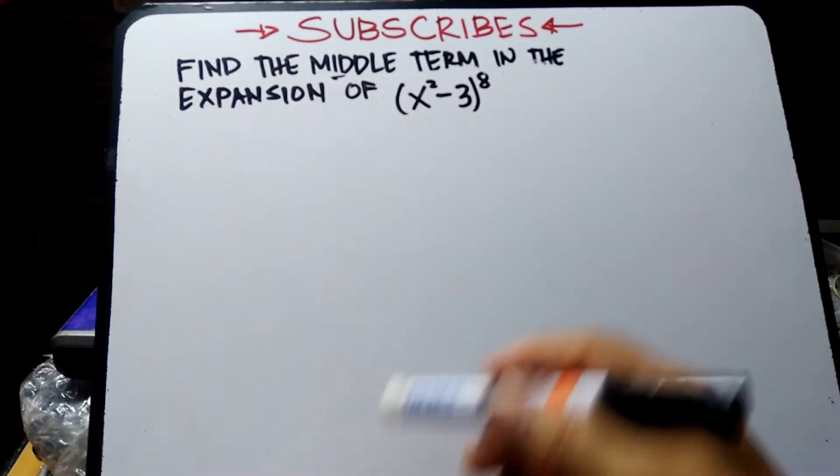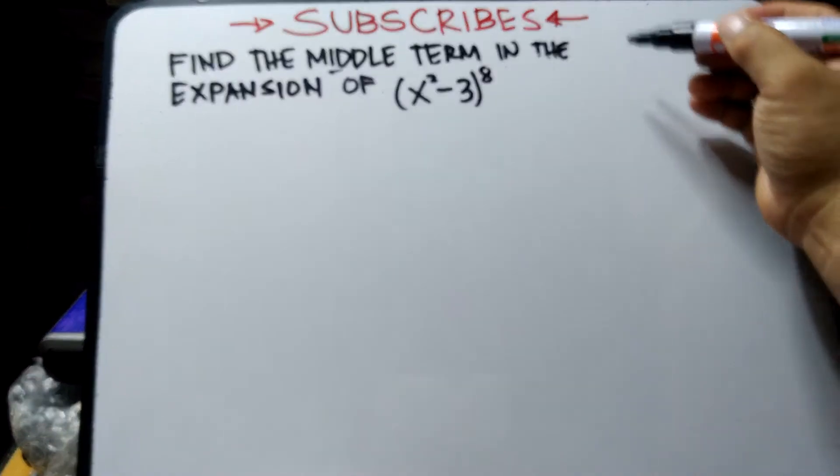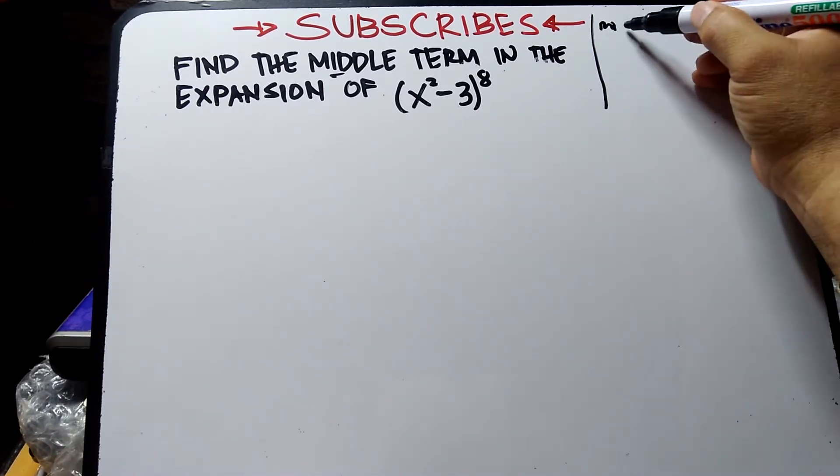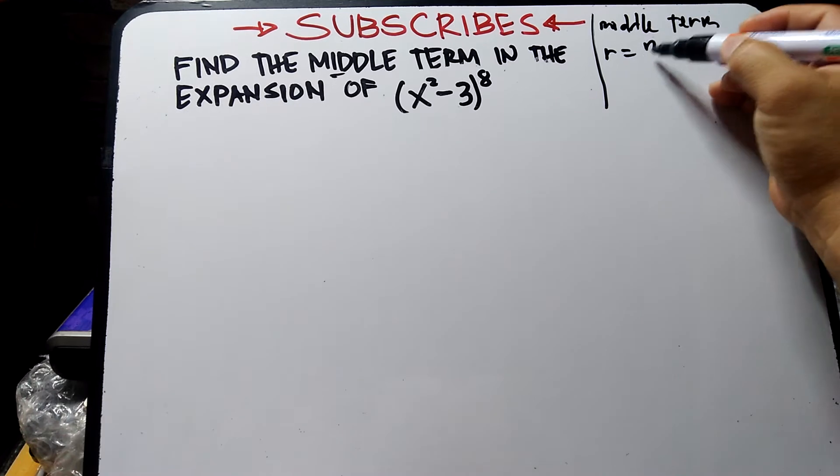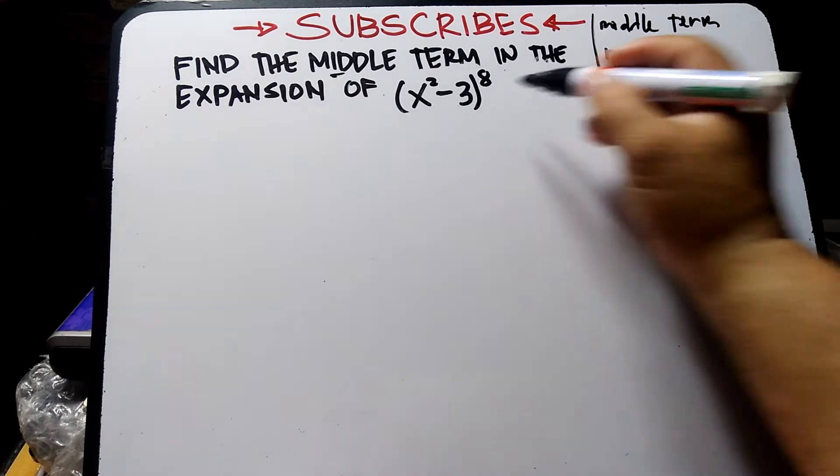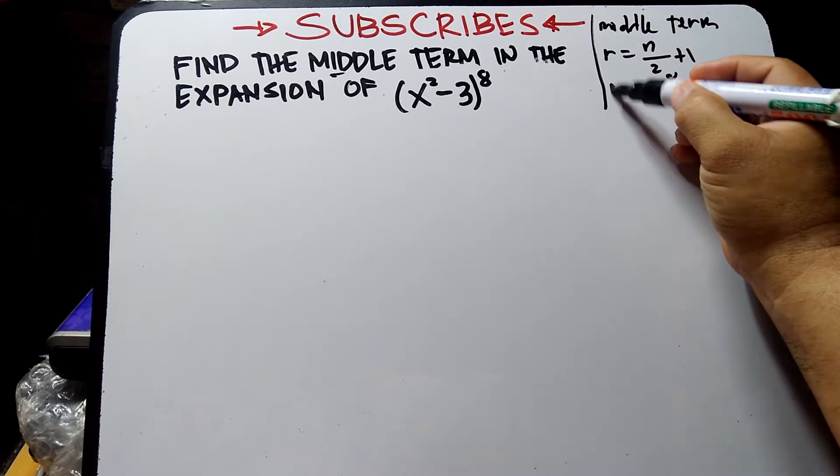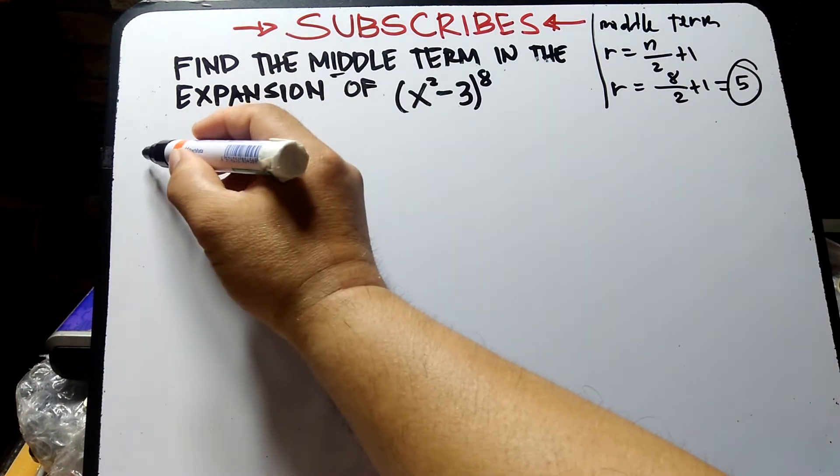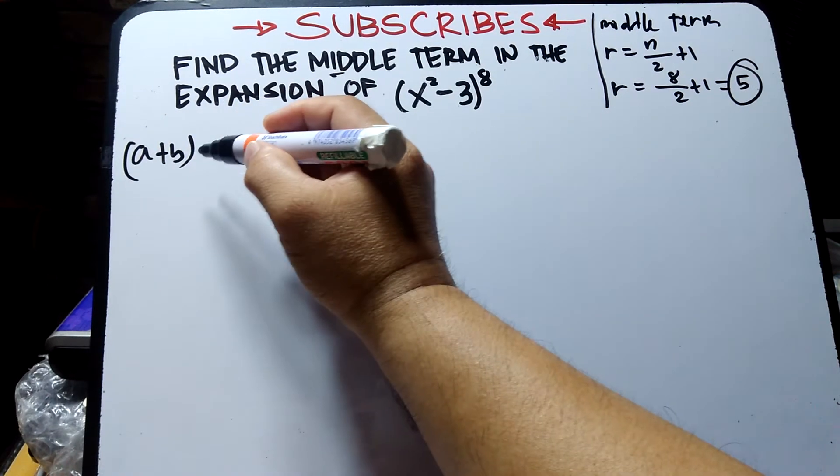Find the middle term in the expansion of (x² - 3)⁸. First, let's find the middle term formula. The middle term is at position n/2 + 1, where n is 8, so 8/2 + 1 equals the 5th term.